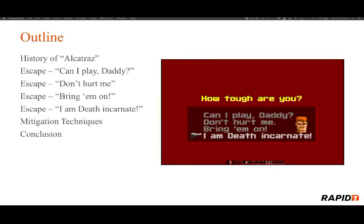We're going to look at a lot of different things today. Specifically, we're going to look at the history of Alcatraz — you'll notice that Alcatraz is in quotations, and there's a reason for that. We're going to look at the island and the prison of Alcatraz, but I'm going to define what I mean by Alcatraz for the purposes of this presentation. We'll move into some escapes at different levels using the Wolfenstein 3D level framework. We'll talk about some mitigation techniques and then wrap up with a conclusion.